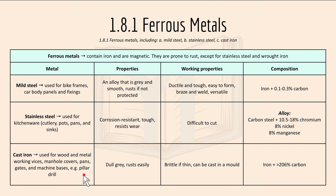Cast iron is used for wood and metal working vices, manhole covers, pans, gates and machine bases like pillar drills. Its properties include a dull grey appearance and it rusts easily. For working properties, it's brittle if thin and it can be cast into a mould.